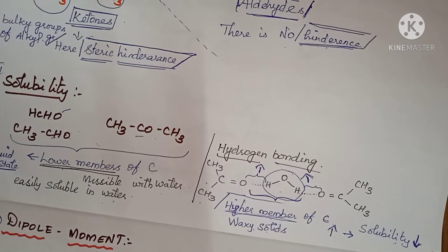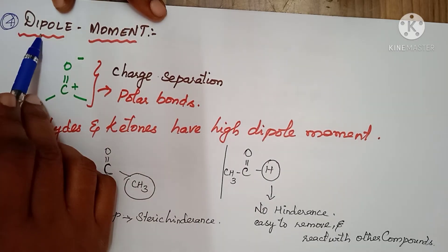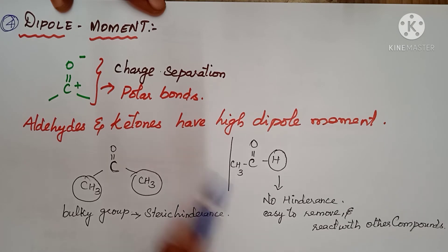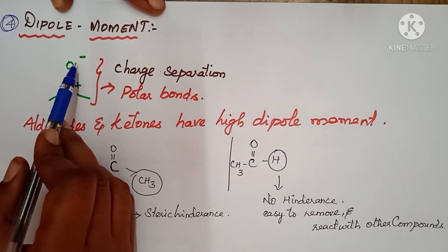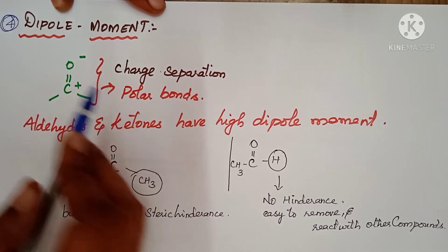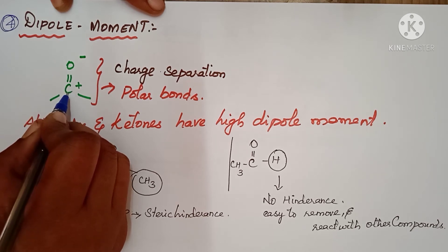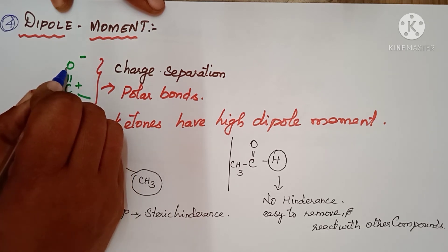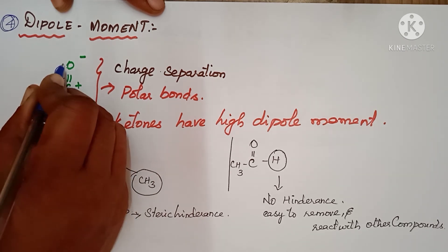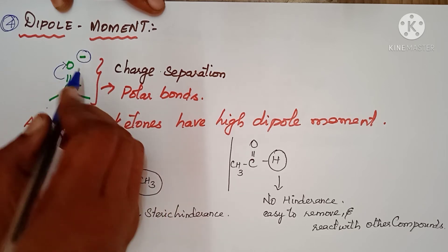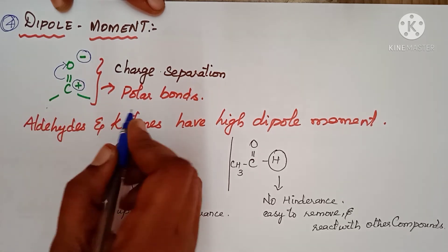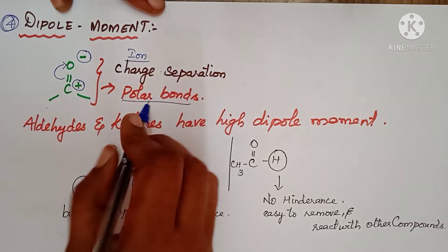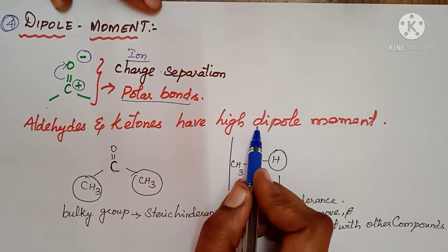The last point is dipole moment. When different atoms are combined, you get a polar bond. In the carbonyl group C=O, oxygen is electronegative and pulls electrons towards itself, making carbon electropositive. This charge separation creates a polar bond, so aldehydes and ketones have a high dipole moment.